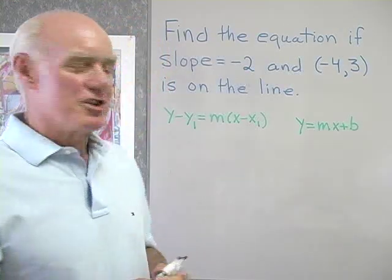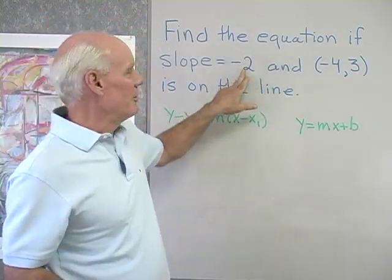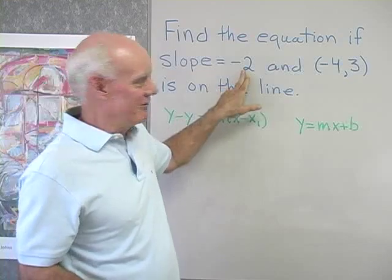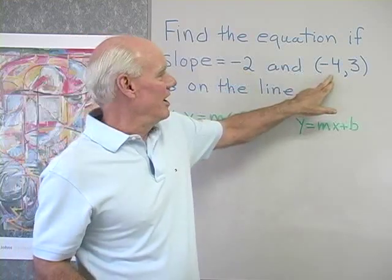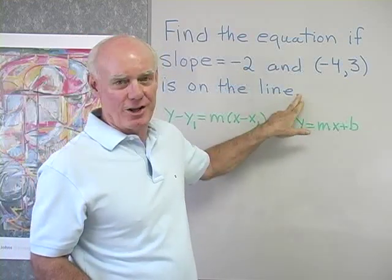So here we want to find the equation of a line if the slope of the line is negative two and the point (-4, 3) is on the line.